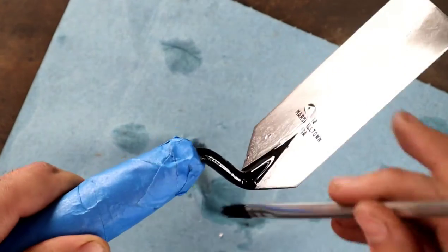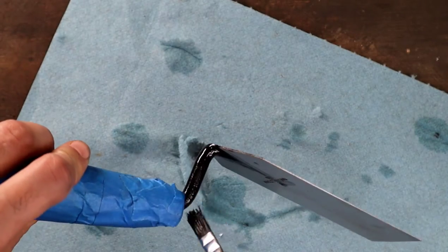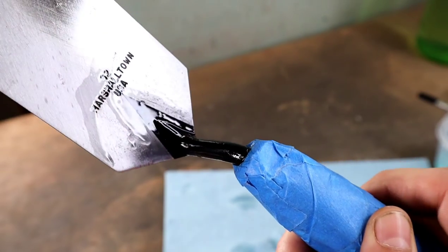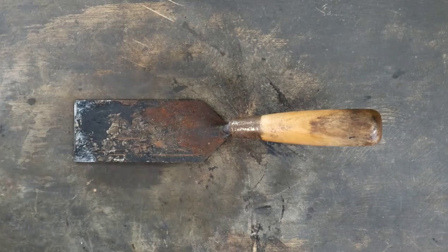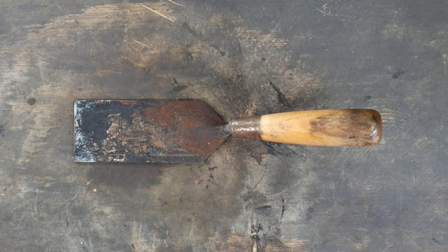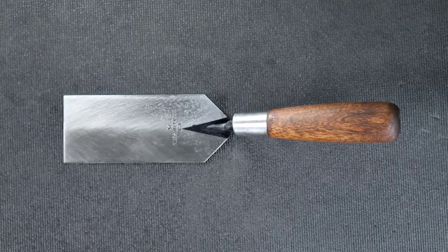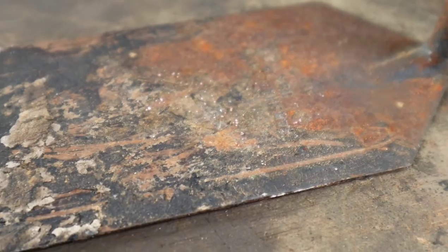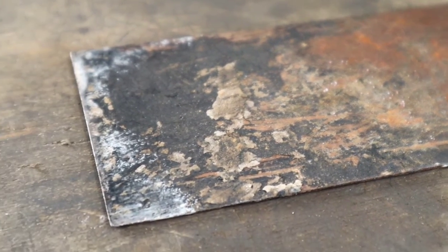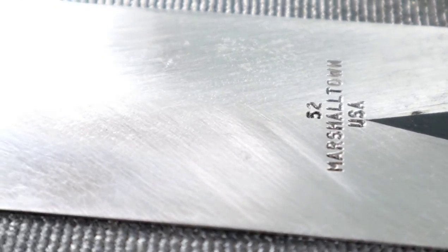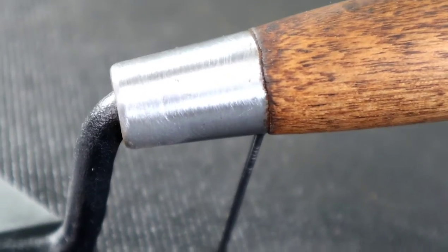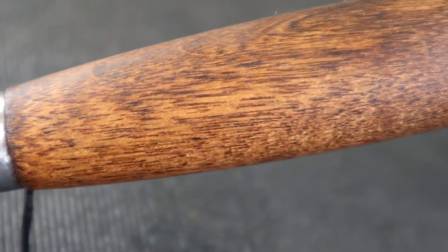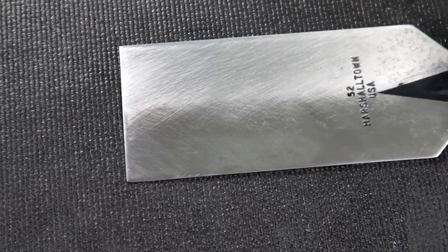The results are in, and the new black ferrule and shank are exactly what this piece needed to take it to the next level. A quick reminder of where this piece was before we started to help us appreciate just how good it looks now. This Marshalltown trowel belongs back into the rotation. It can now be used with the same pride that it was manufactured with. The blade has been restored, the rust is gone, the handle is, dare I say, upgraded, and the bluing turned out better than expected.